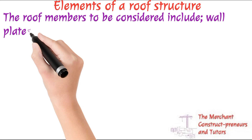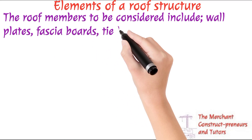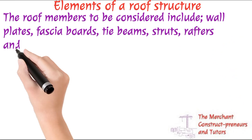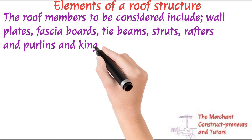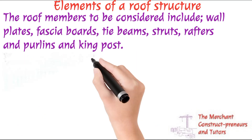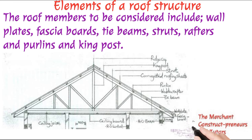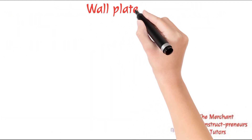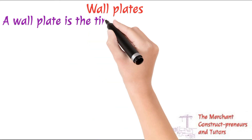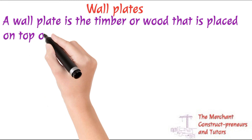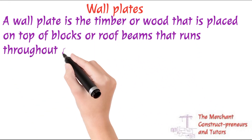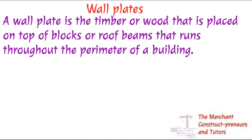Now the roof structure — let's look at the elements. I'm looking at the very simplest roof type. The roof members to be considered include the wall plates, the fascia boards, the tie beams, the struts, rafters, and purlin lines. Looking at this image, you can see each of them pointed out. So we're looking at them bit by bit and using examples to get the quantity of wood needed for each — the wall plate, the purlin lines, the rafters, the tie beams. Let's take the wall plates first.